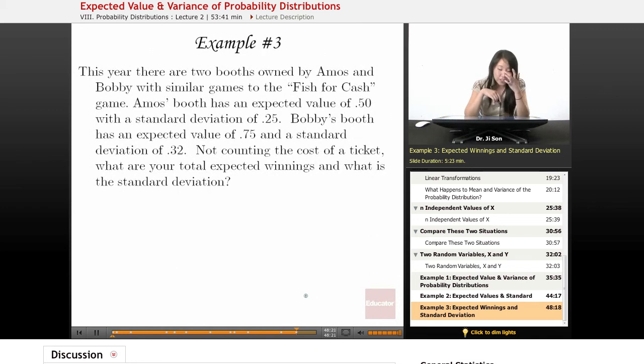Example 3. This year there are two booths owned by Amos and Bobby with similar games to the Fish for Cash game. Amos's booth has an expected value of .50 with a standard deviation of .25. Bobby's booth has an expected value of .75 and a standard deviation of .32. Not counting the cost of the ticket, which I presume is a dollar, what are your total expected winnings and what is the standard deviation?